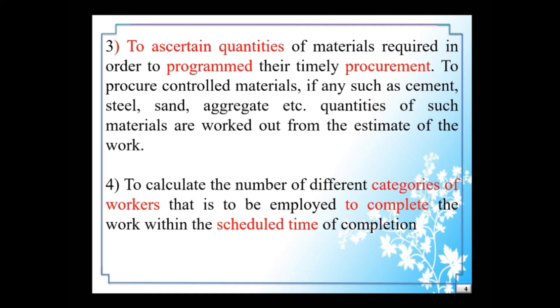Third: to ascertain quantities of material required in order to program their timely procurement. To procure controlled material such as cement, steel, sand, aggregate, etc., quantities of such materials are worked out from the estimate of the work. It is necessary to prepare the estimate from its plan and specification and compute the quantity of material such as cement, sand, aggregate, etc. at the various stages of construction. Otherwise, the work has to be stopped before its completion due to shortage of material according to the program.